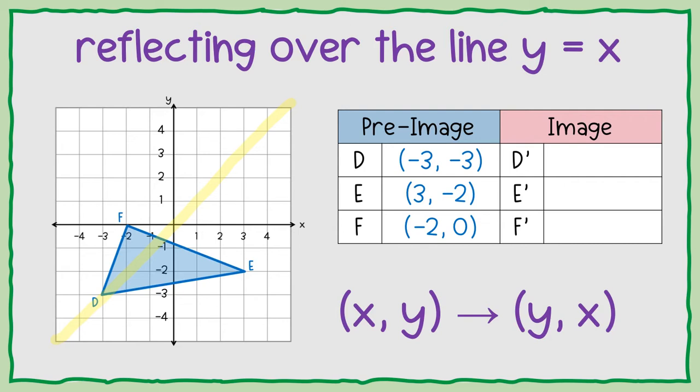So what we're going to do is we're going to switch places for each point. So point d is a negative 3, negative 3. So when they switch places, it still is negative 3, negative 3. So d is the same as d prime.